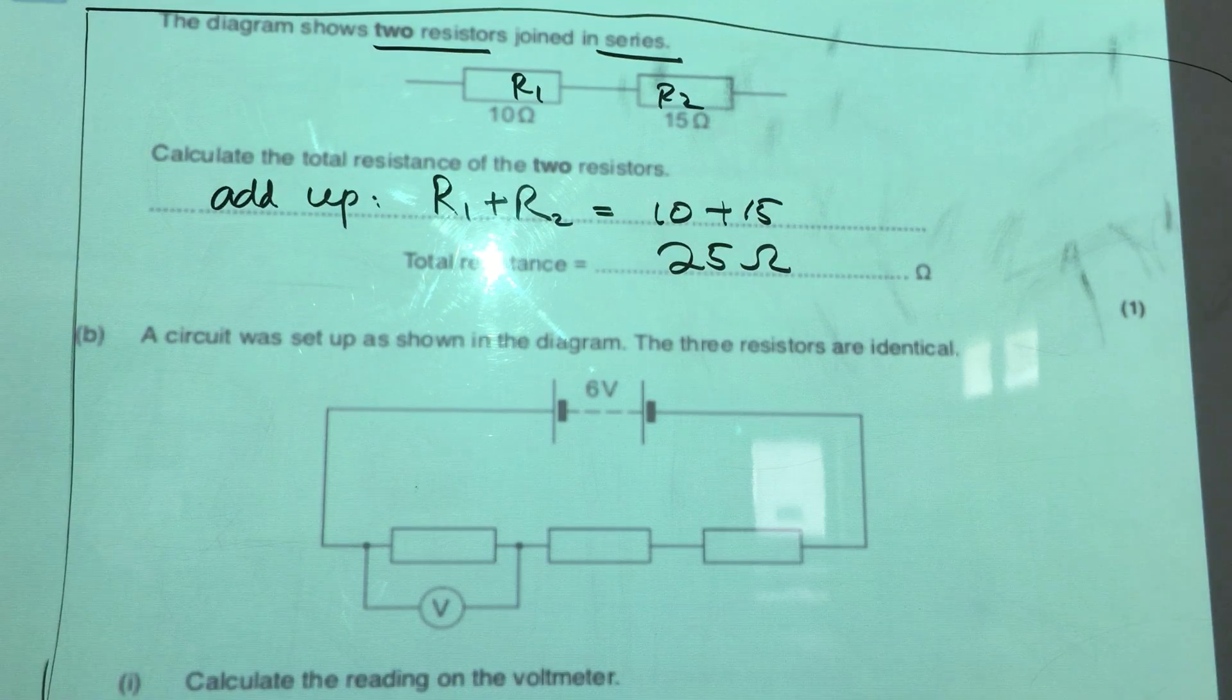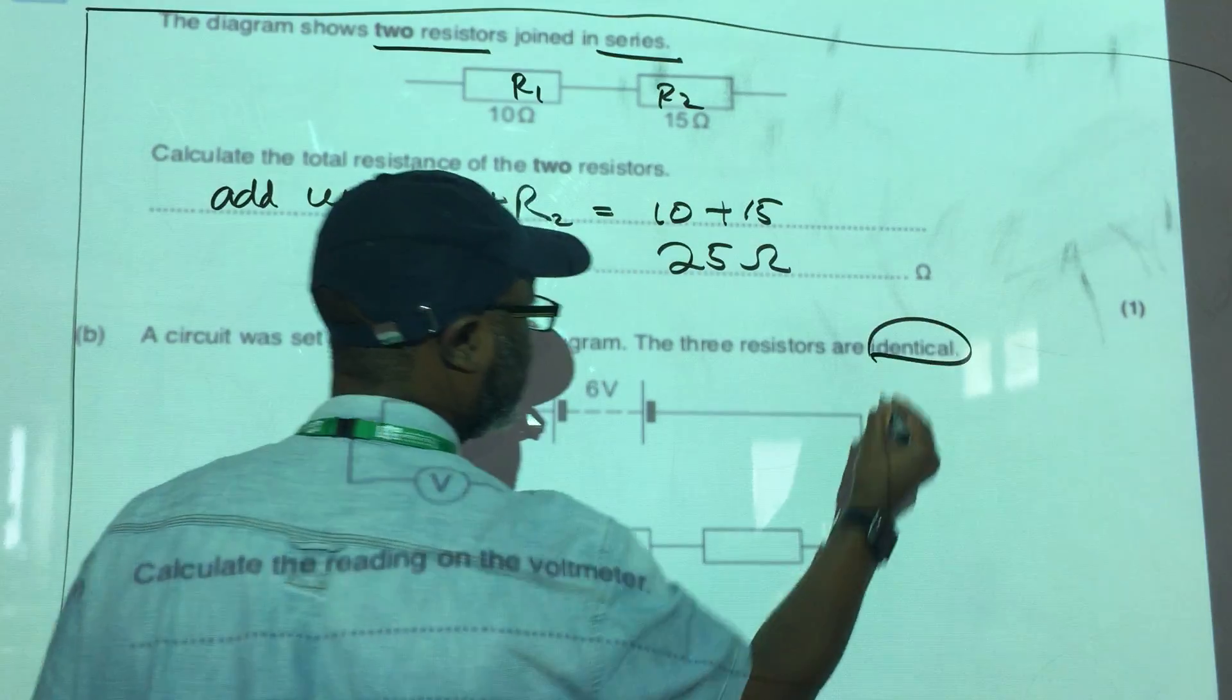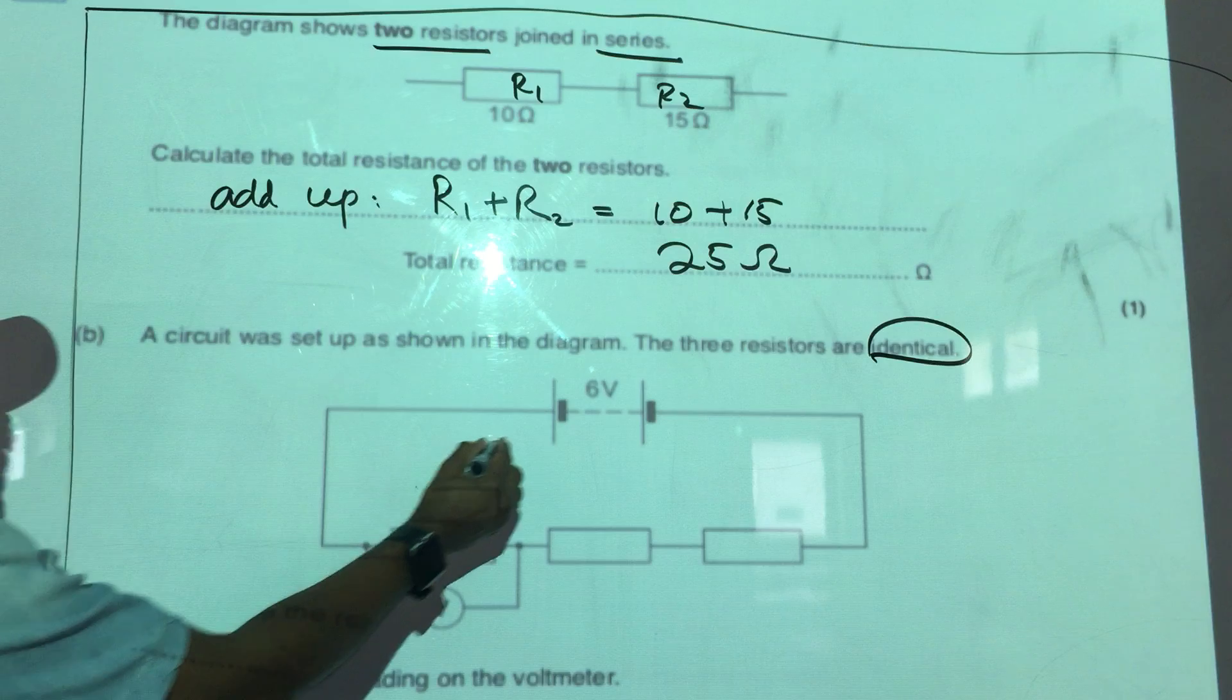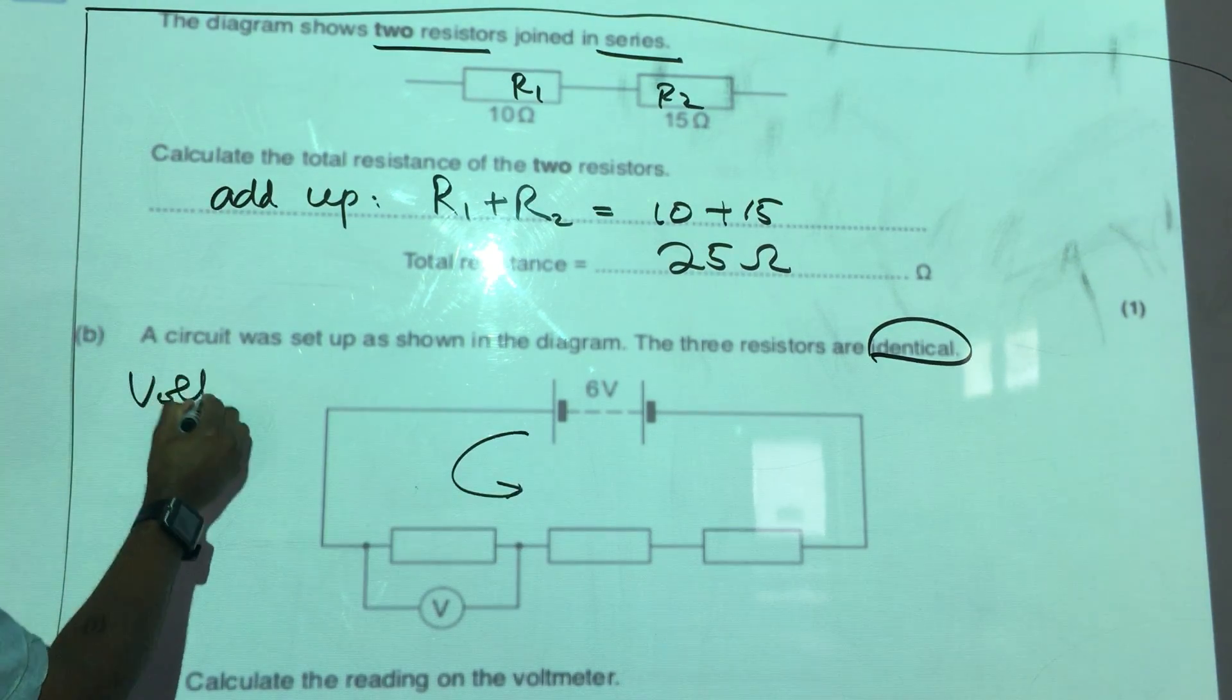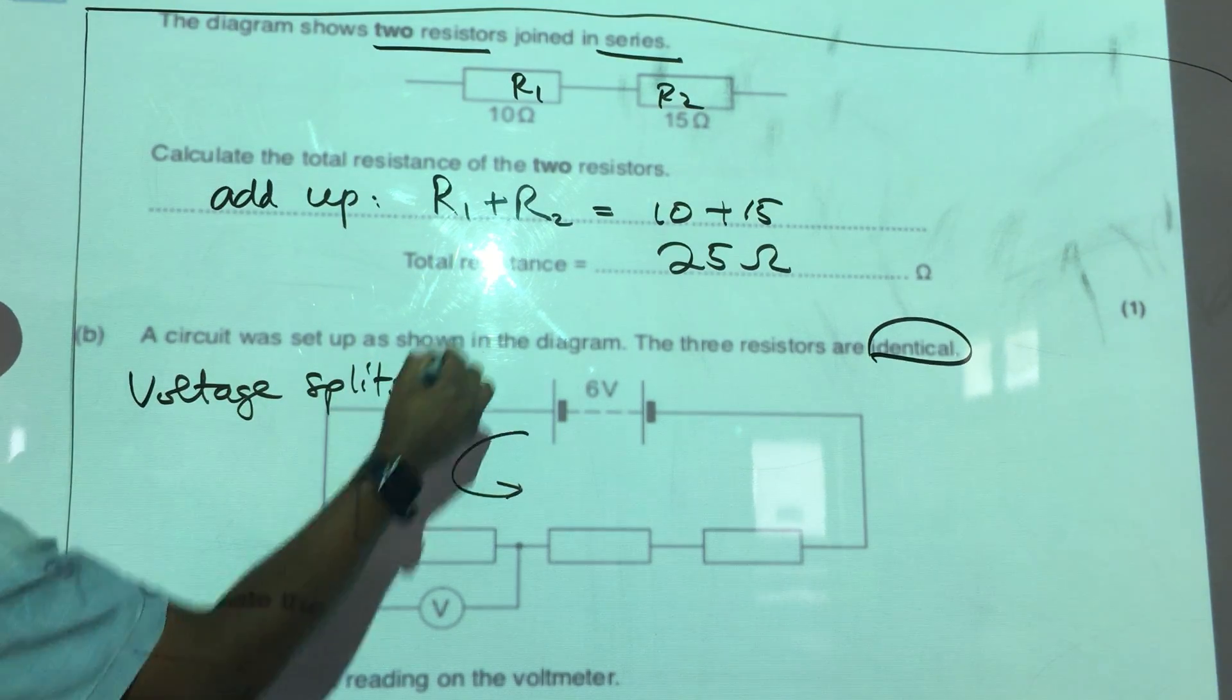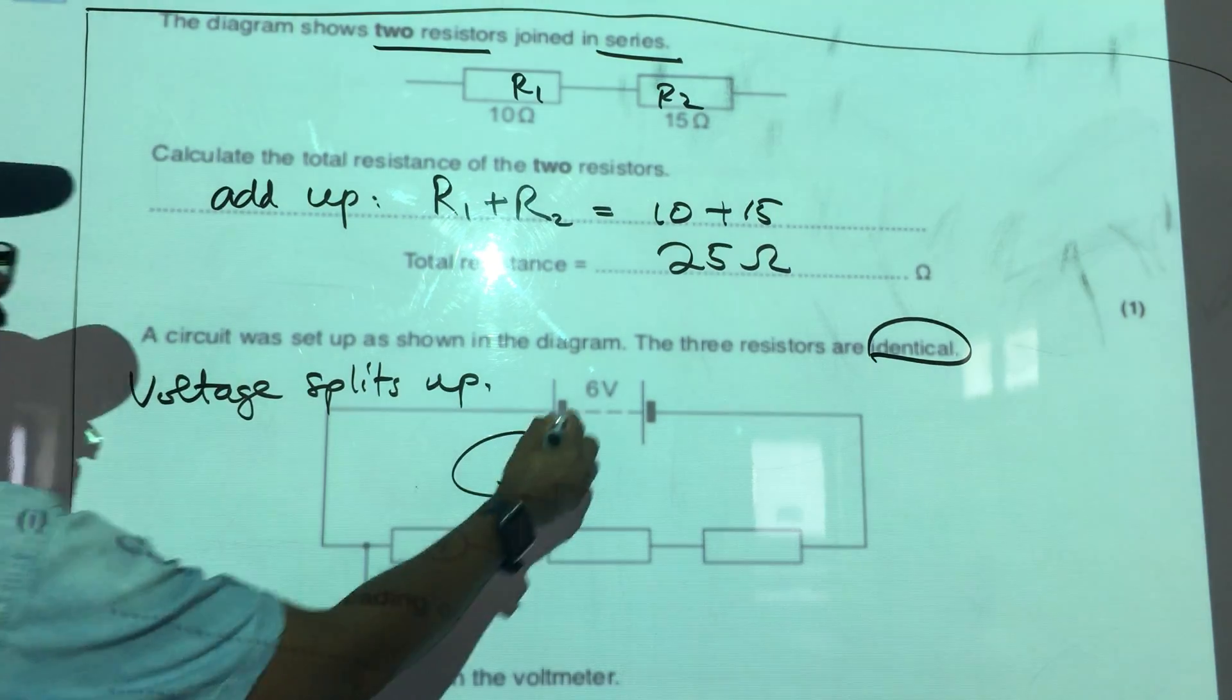The three resistors are identical. We need to take note of the word identical. In a series circuit, voltage splits up, and if the resistors are identical, they have to split up equally.